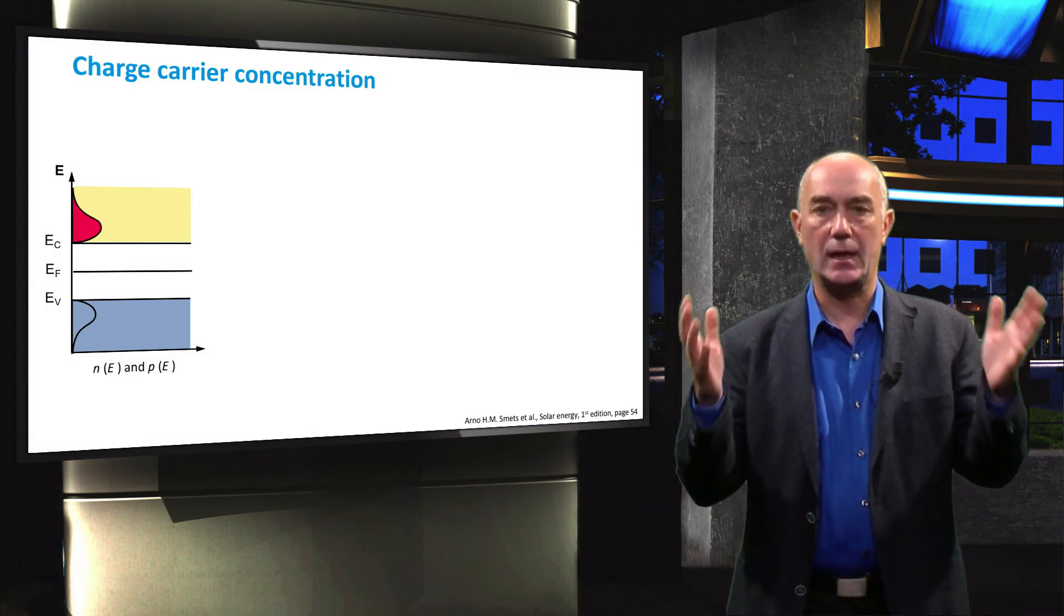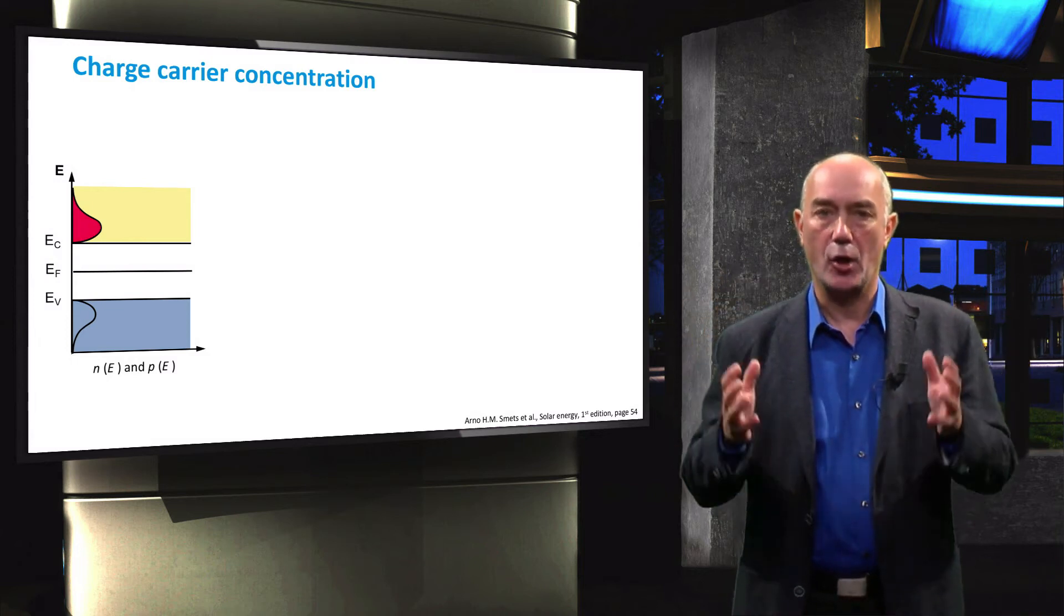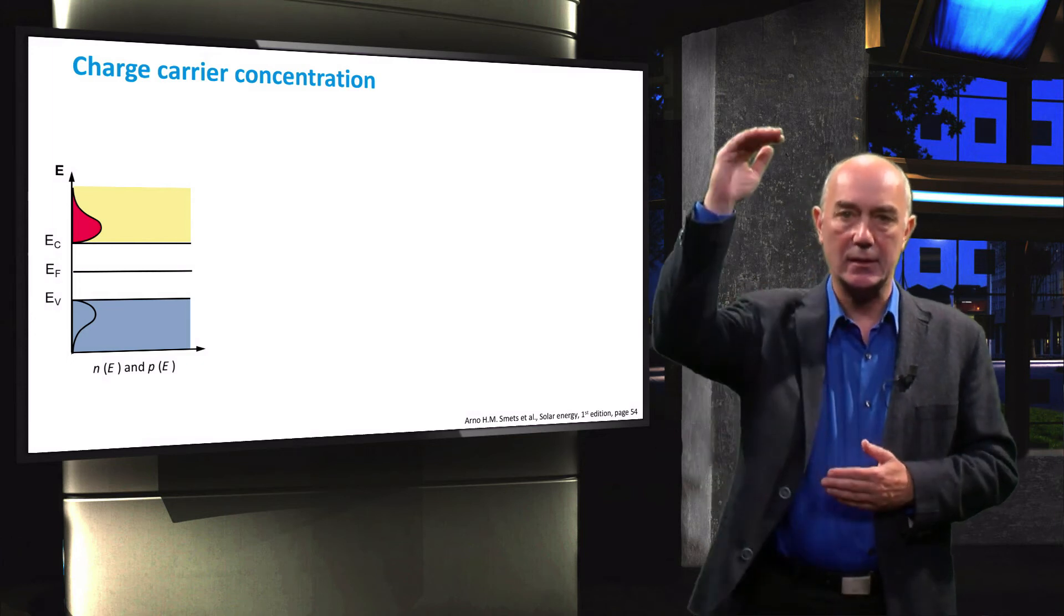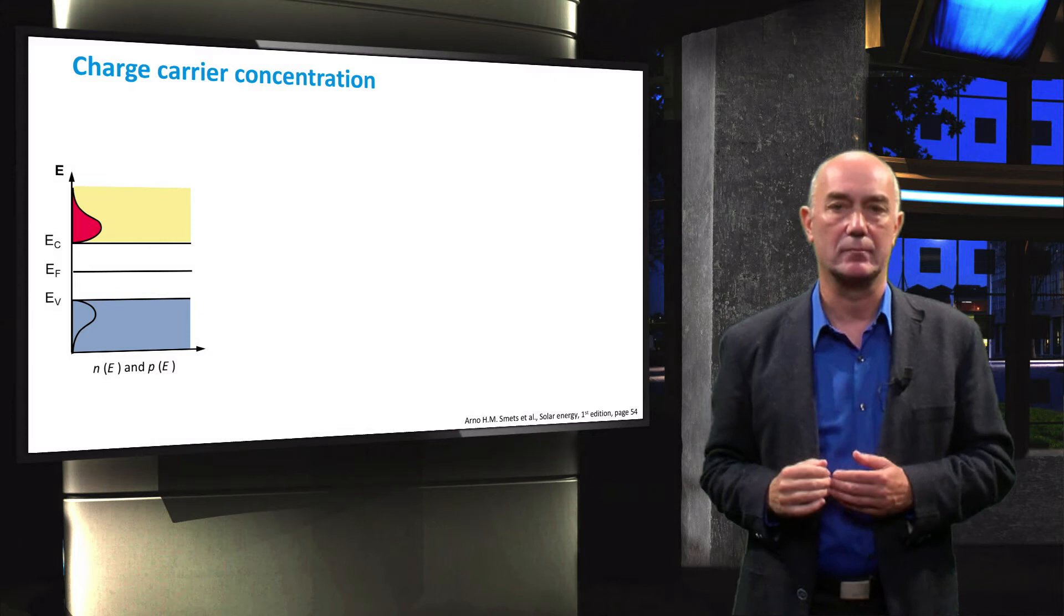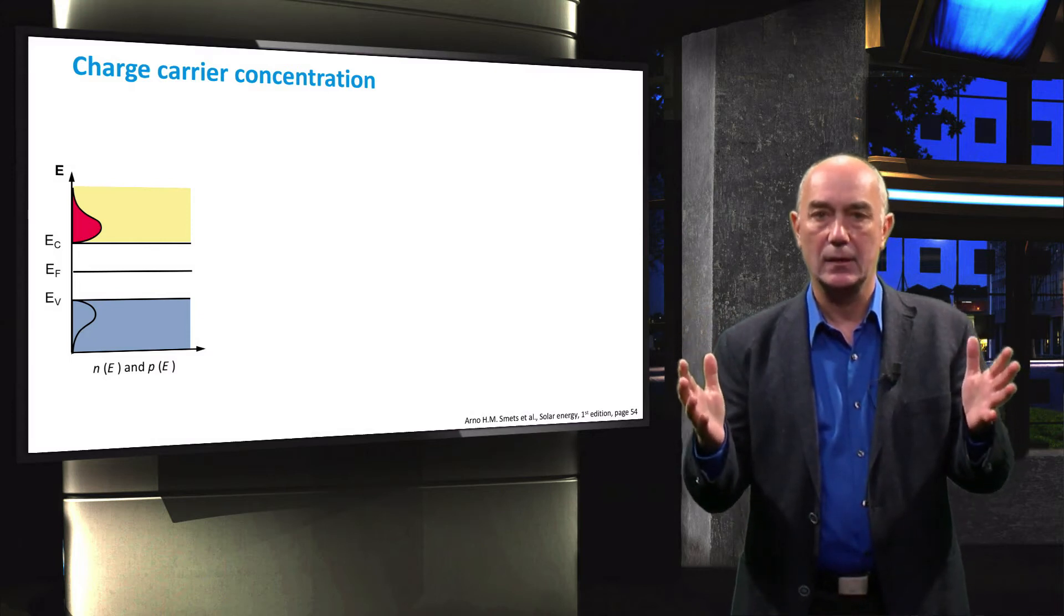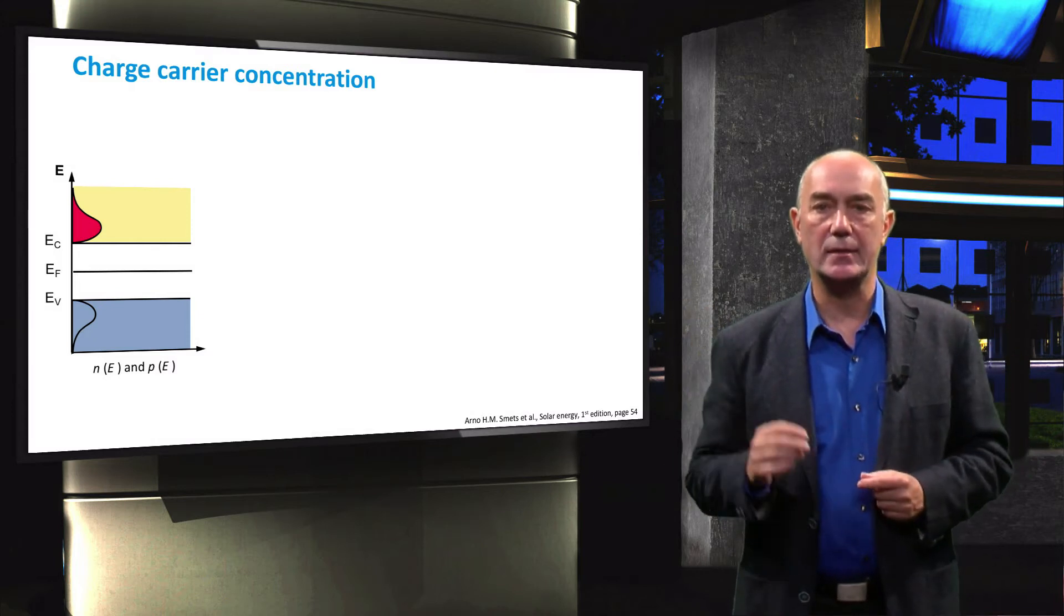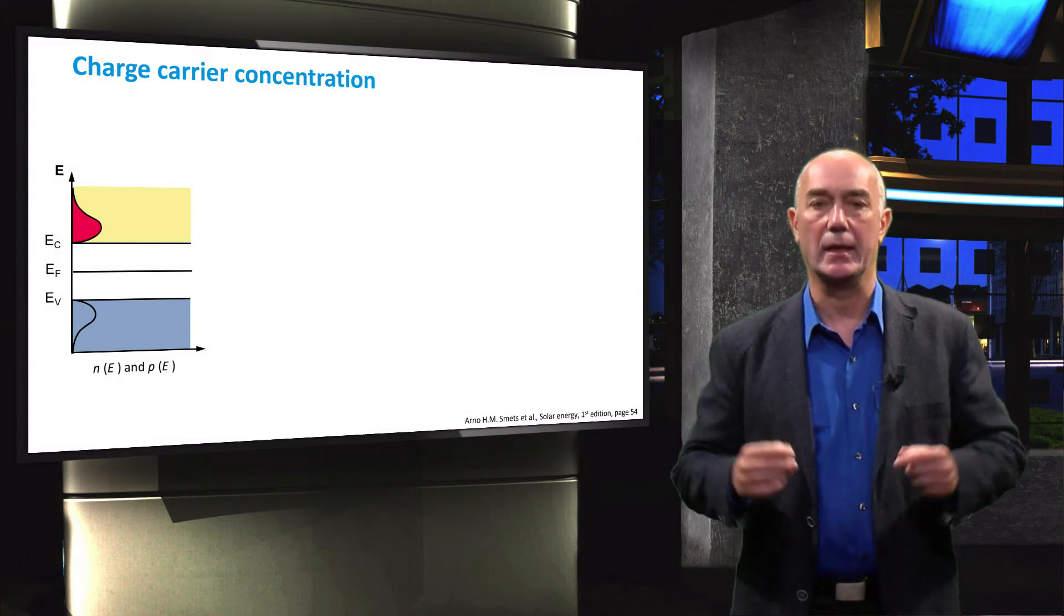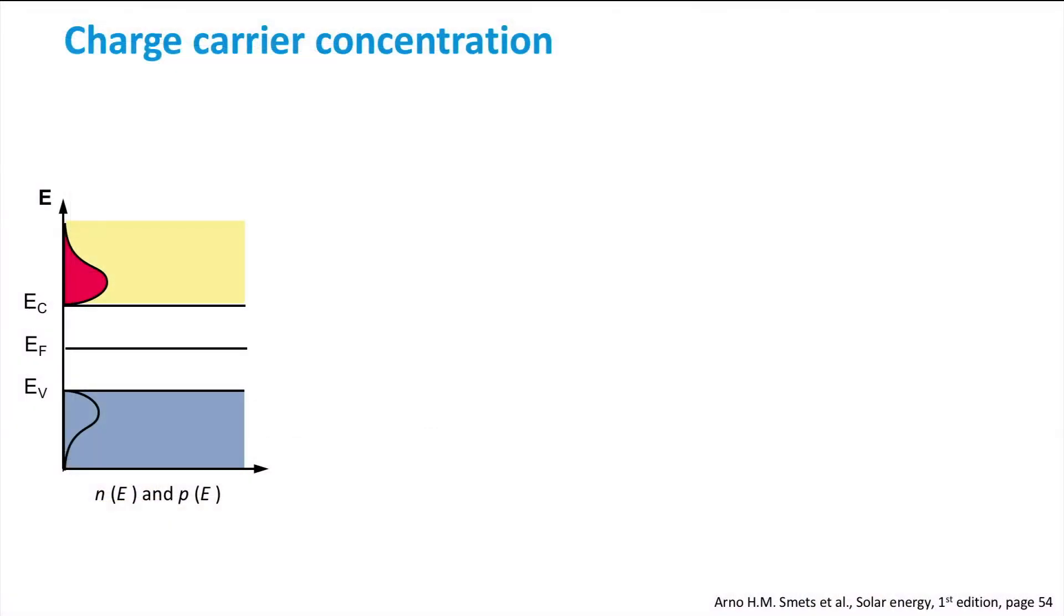As we discussed, the probability of an electron occupying an energy level above the Fermi level increases with increasing temperature. However, there are no available states in the bandgap. No electrons will occupy an energy level in the bandgap. If the temperature starts to increase from zero Kelvin, the probability of an electron occupying an energy state in the conduction band will become greater than zero.